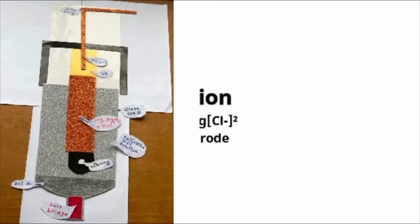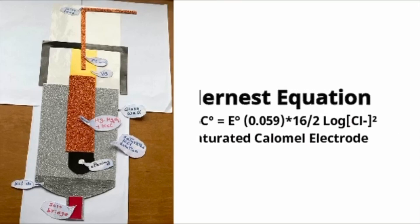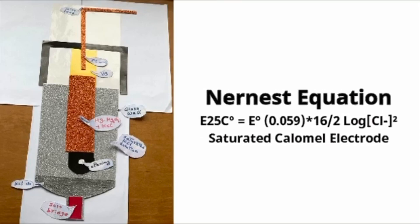Nernst equation: E at 25 degrees Celsius equals E0 minus 0.05916 over 2 log of [Cl⁻] squared. Saturation: saturated calomel electrode.